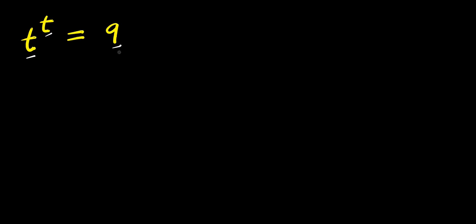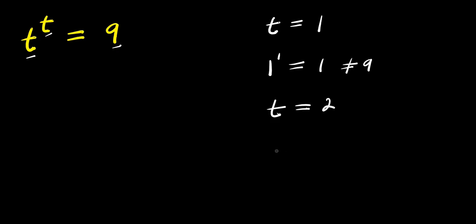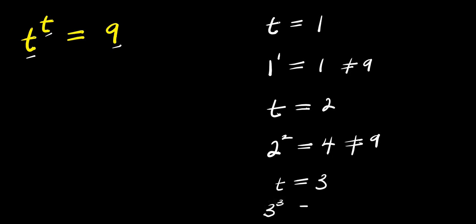We are solving for the value of t that satisfies this equation. If you consider t equals 1, what we will have is 1 to the power of 1, and this will give you 1, which is not 9. If you consider t equals 2, what you will have is 2 to the power of 2, and this is 4, which is also not 9. If you consider t equals 3, what you will have is 3 to the power of 3, which is 27, and this is not 9.